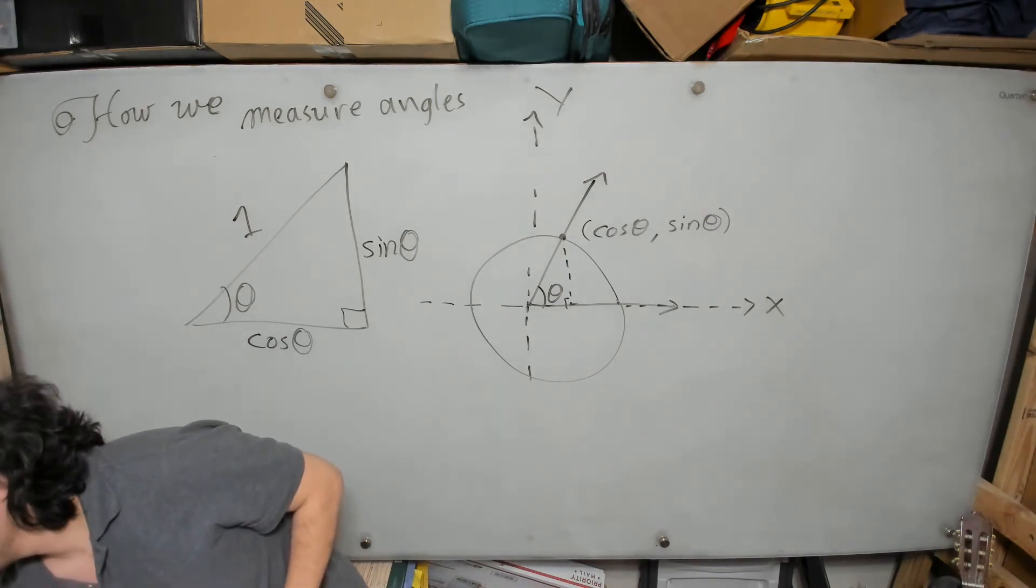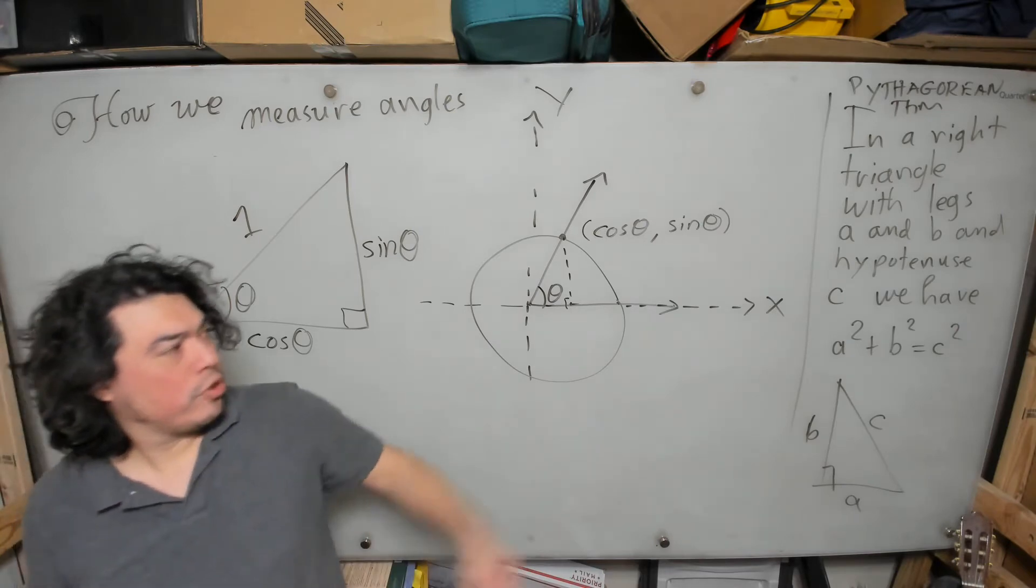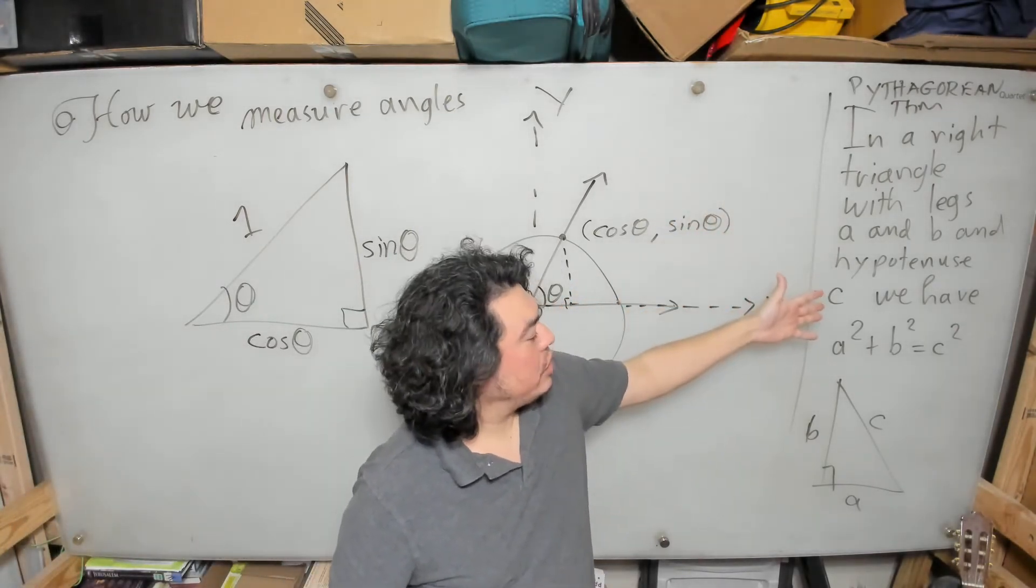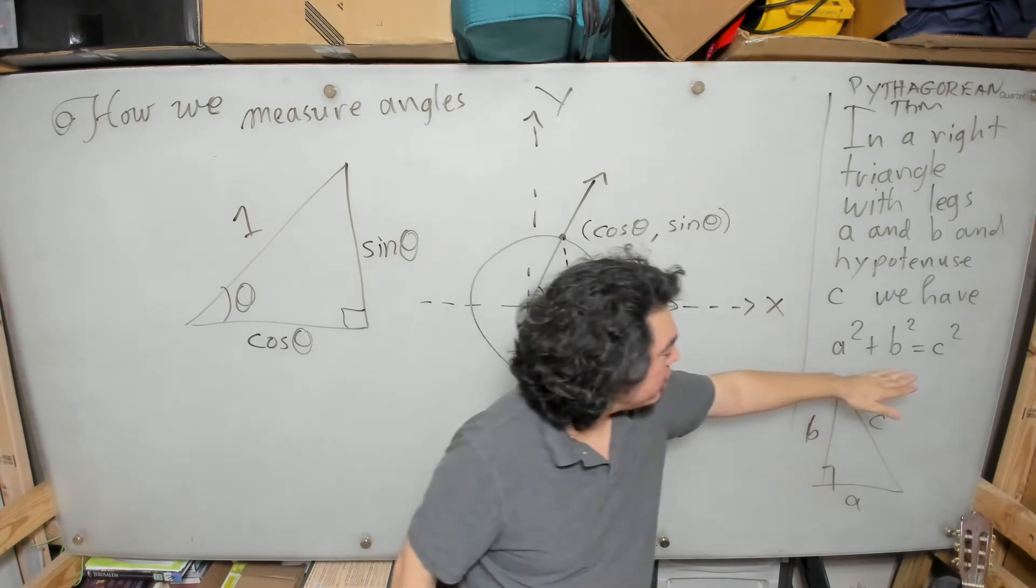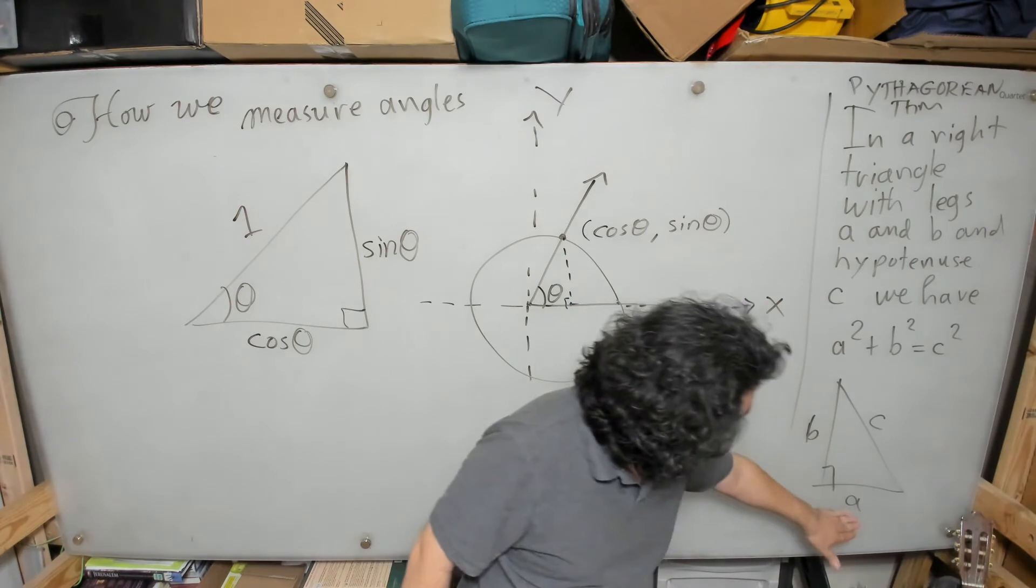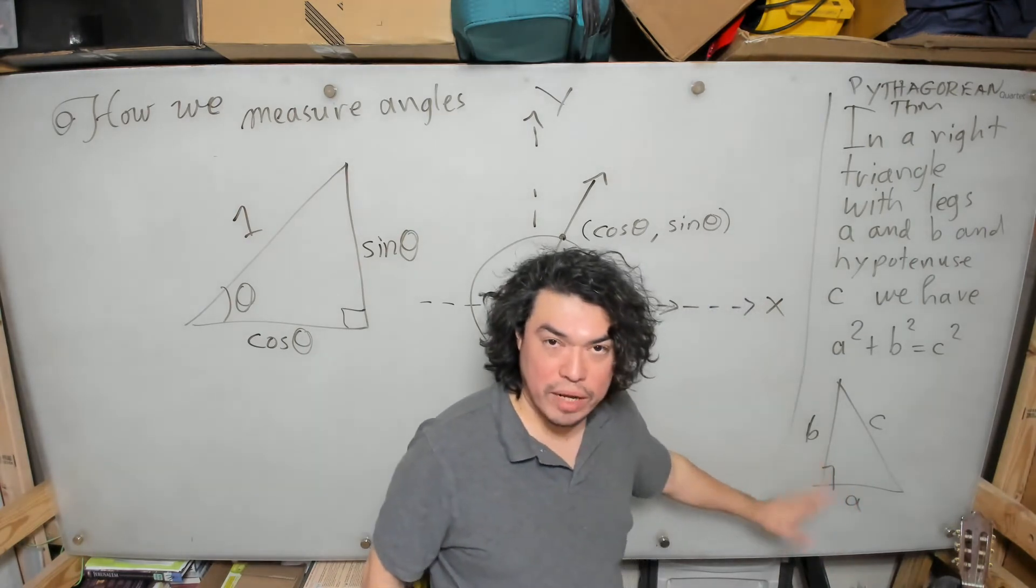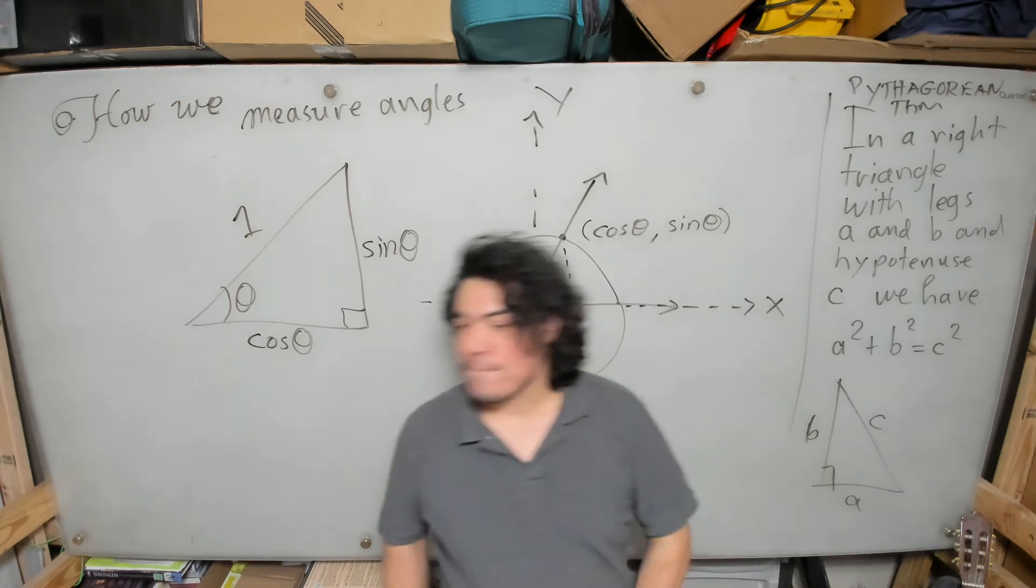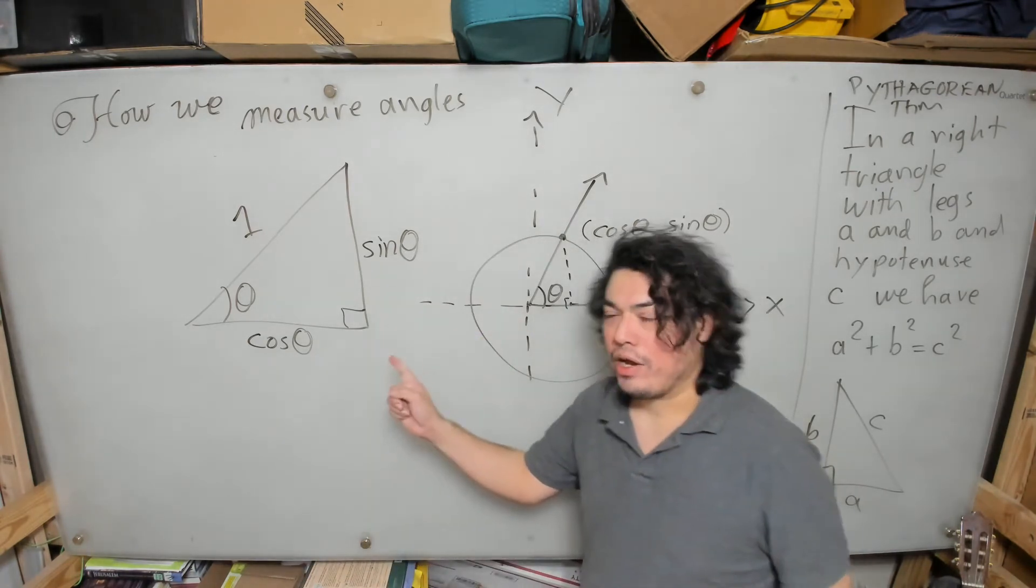And so here we're going to remember one of the famous theorems of geometry—we're going to put it to some use. We know the Pythagorean theorem: in a right triangle with legs a and b and the hypotenuse c, we have that the sum of the squares of the legs is equal to the square of the hypotenuse. So a squared plus b squared, where a and b are the legs, when you square them and add them, that's the same as c squared.